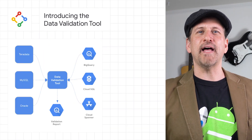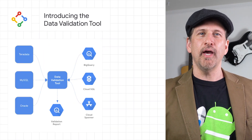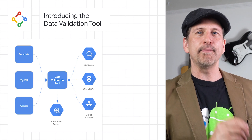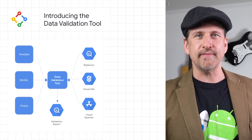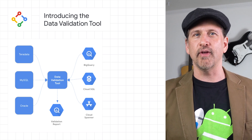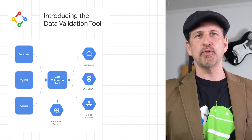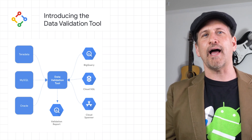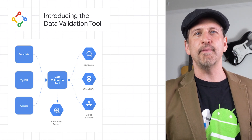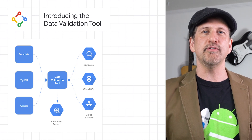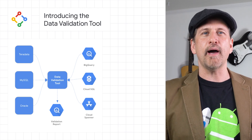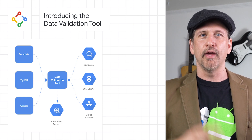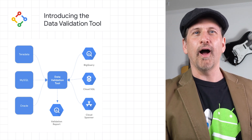We announced the Data Validation Tool, an open-sourced Python command line tool that provides an automated and repeatable solution for data validation across different environments. It uses the IBIS framework to connect to a large number of data sources, including BigQuery, Cloud Spanner, Cloud SQL, Teradata, and more, providing a standardized solution to validate newly migrated data in Google Cloud against the existing data from on-prem systems. Learn more on the post.